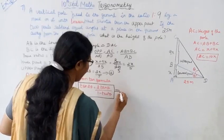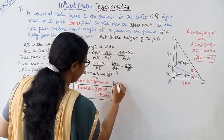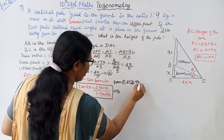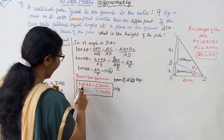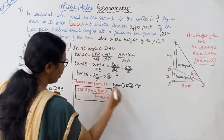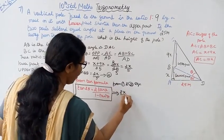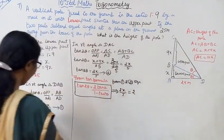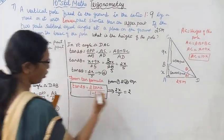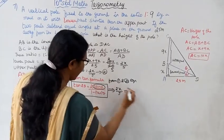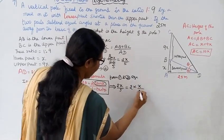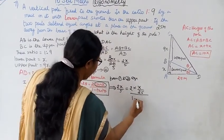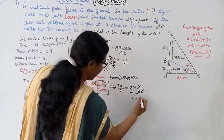Using the first and second equations together: tan 2 theta equals 2x by 5, and from equation one, tan theta equals x by 25. We substitute these into the tan 2 theta formula: 2 tan theta divided by 1 minus tan squared theta.